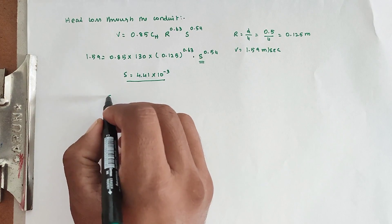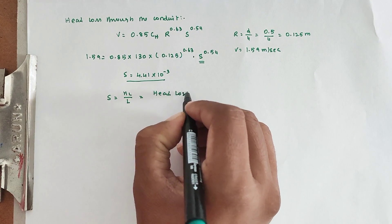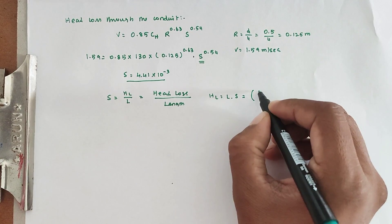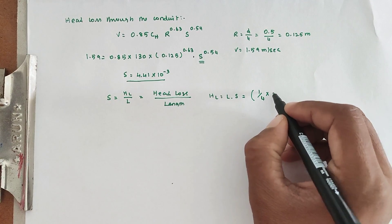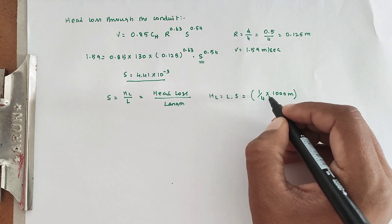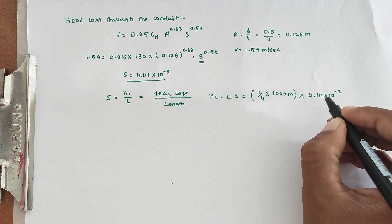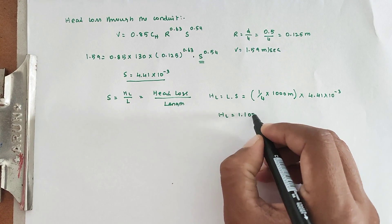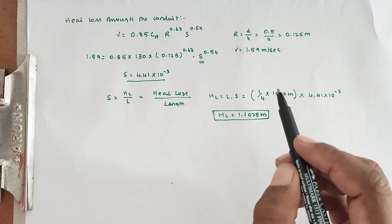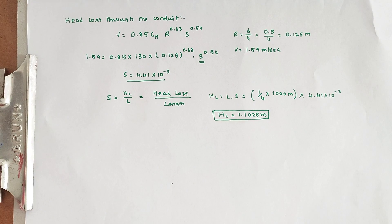Using S = HL / L, head loss HL equals L × S, where L = 1.4 km = 1400 m and S = 4.41 × 10⁻³. So HL = 1400 × 4.41 × 10⁻³ = 1.1025 m. This is the head loss, and the final answer. We have designed the coarse screen, bell mouth entry, and intake conduit, and found the head loss. Thank you.